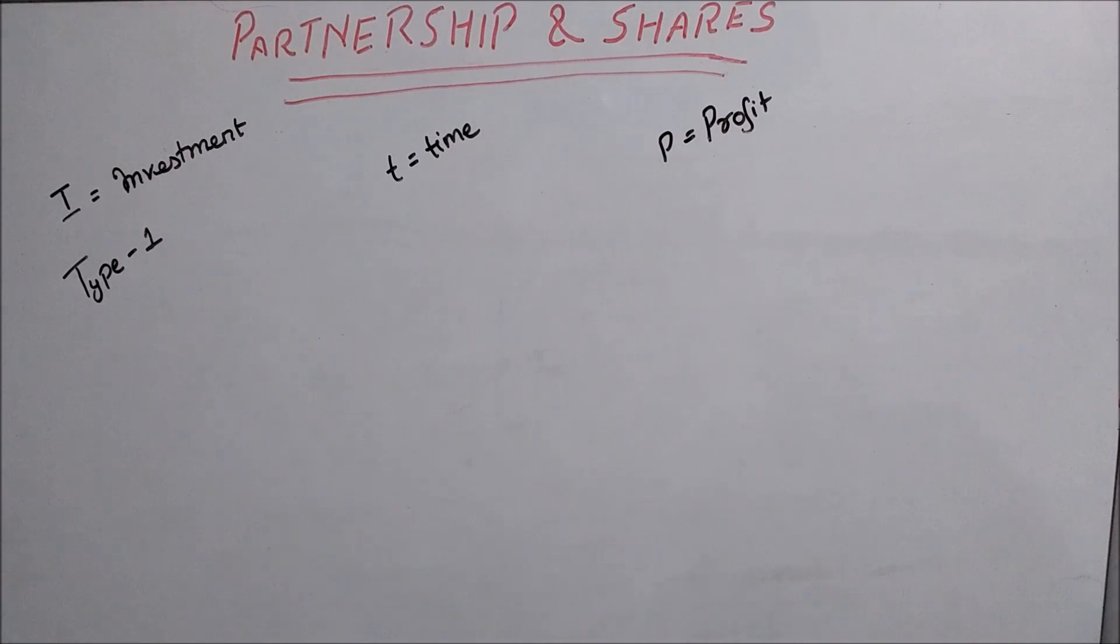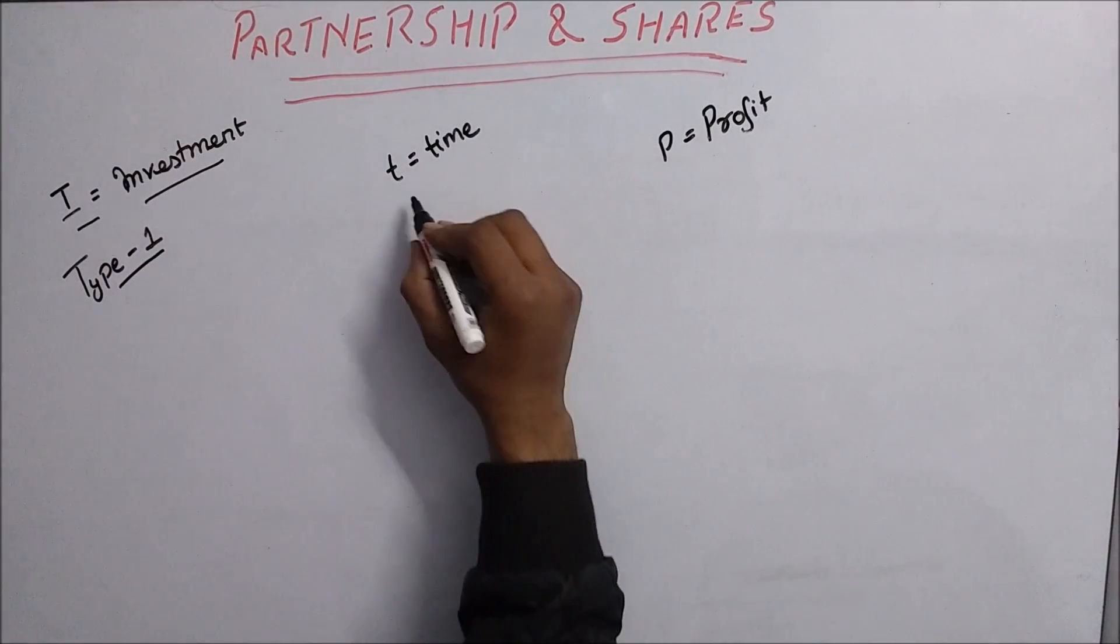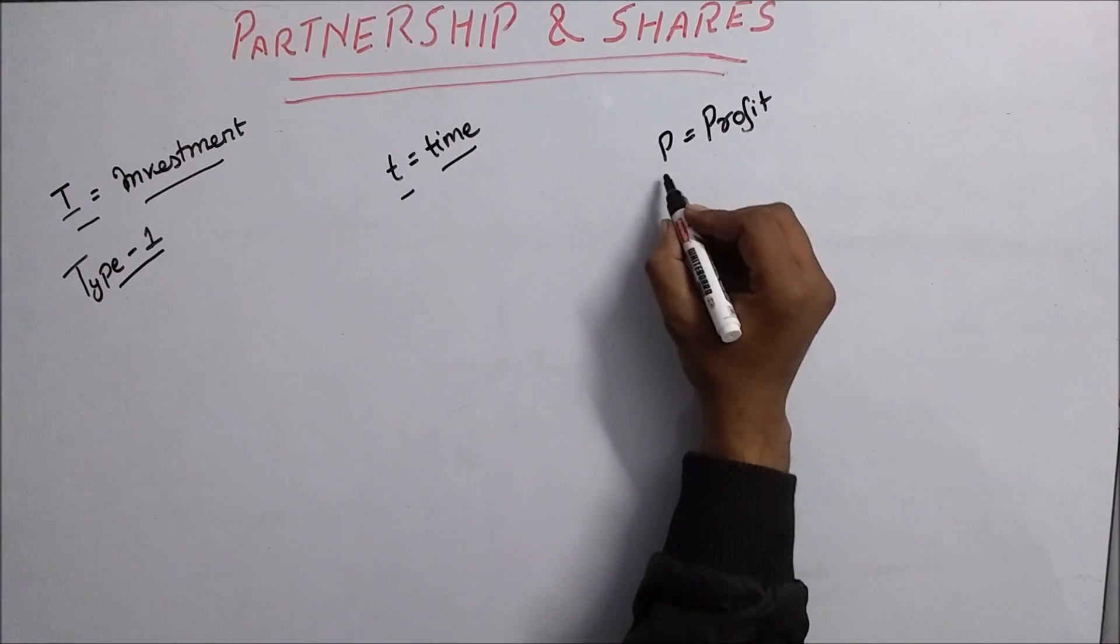Now Type 1: In this, I stands for investment, T stands for time, and P stands for profit.